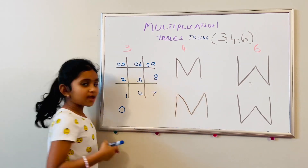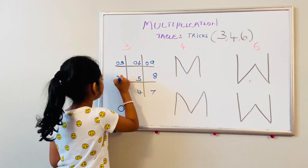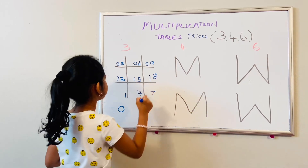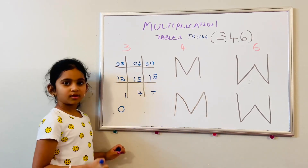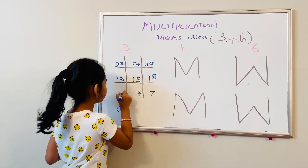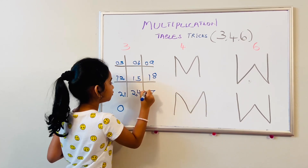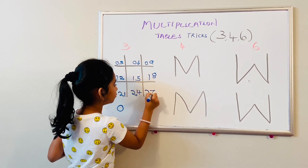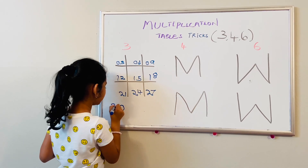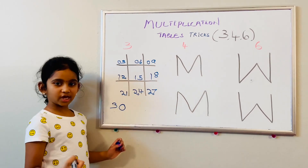The next number is one, so let's write one, one, one. The next number is two, so let's write two, two, two. And then the next number is three, so let's write three. This is the third table.